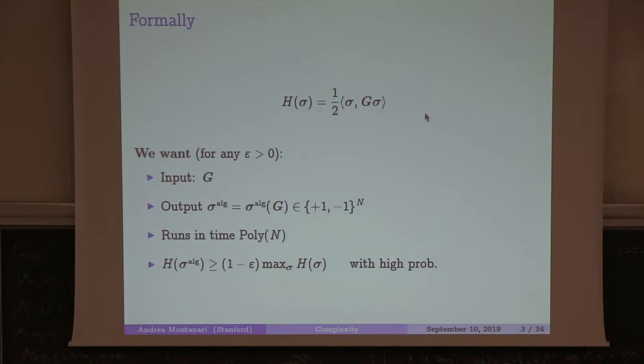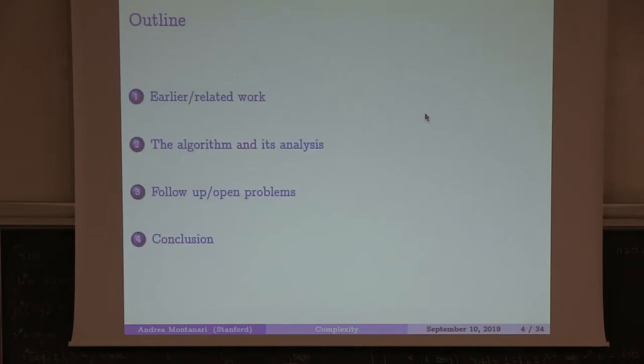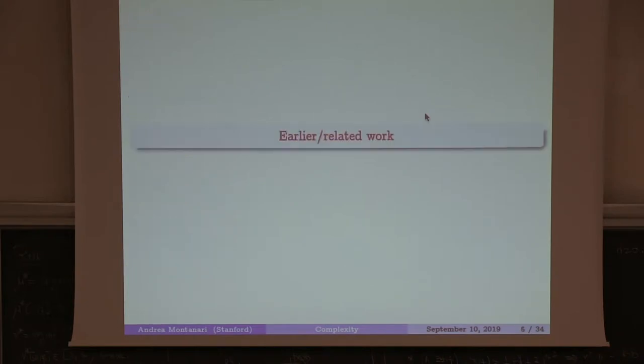It must be such that the energy achieved is bigger than one minus epsilon times the maximum energy that you can achieve, with high probability with respect to the choice of the coupling. So unlike in standard physics notation, I think of this as a maximization problem instead of as a minimization problem. Does the problem make sense? Epsilon is a constant, it's 0.00001, or any arbitrary accuracy.